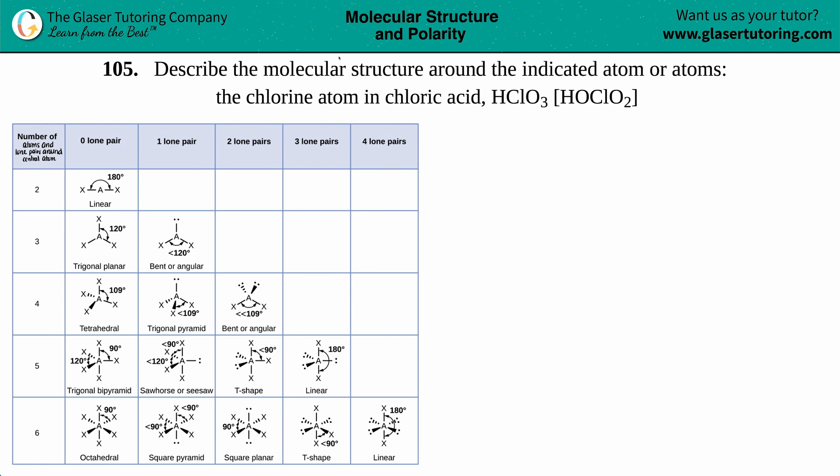Number 105, describe the molecular structure around the indicated atom or atoms. We have to find the molecular structure for the chlorine atom in chloric acid, which is HClO3, but it's more commonly written as HOClO2.